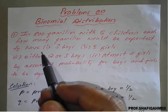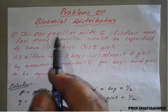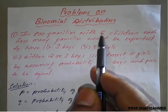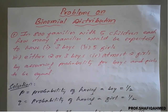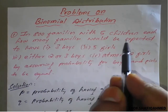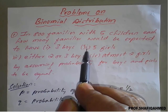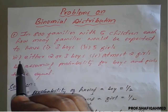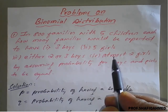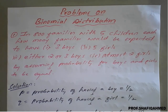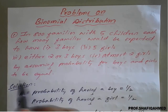Here also we will see problems based on binomial but in a slightly different way. In 800 families with 5 children each, how many families would be expected to have: (1) 3 boys, (2) 5 boys, (3) 5 girls, (4) either 2 or 3 boys, and (5) at most 2 girls — by assuming the probability for boys and girls to be equal.